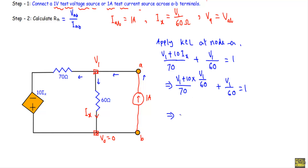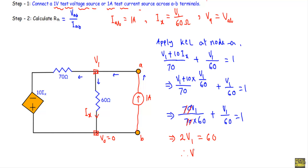Substituting Ix = V1/60 into the KCL equation: 70·V1 / (70×60) + V1 / 60 = 1. Canceling the 70s gives 2·V1 = 60, so V1 = 30 volts. Since Vab equals V1, we have Vab = 30 volts. With Iab = 1 ampere, Rth = 30 volts / 1 ampere = 30 ohms.